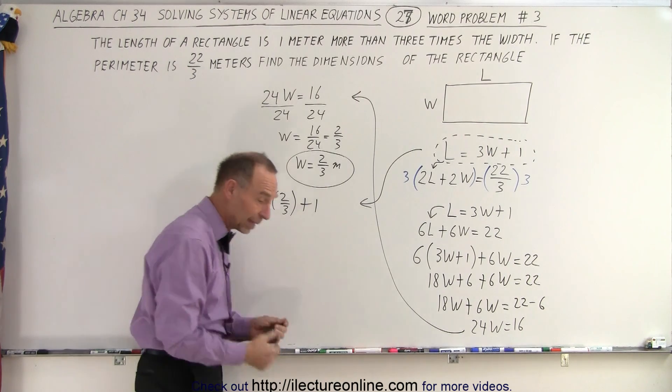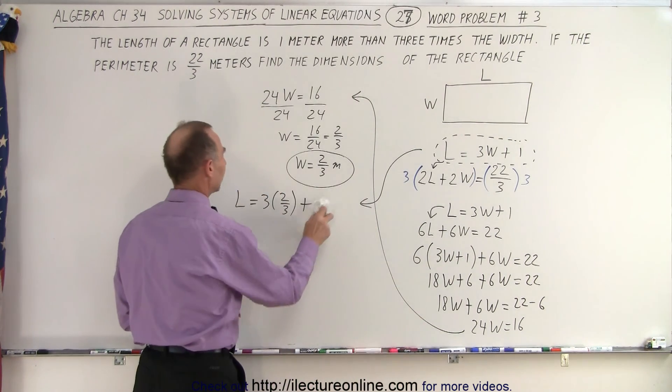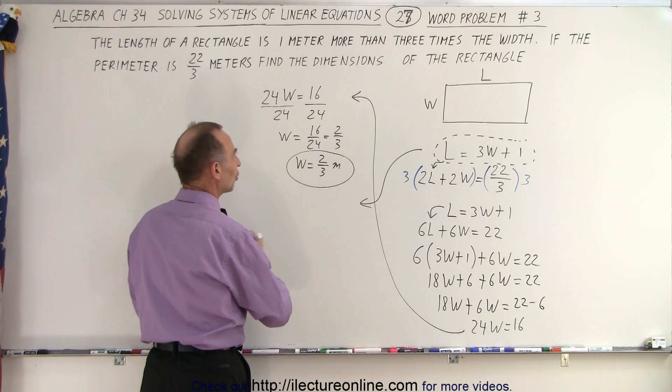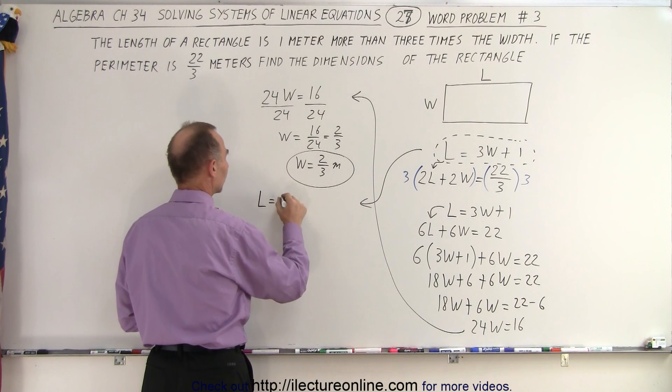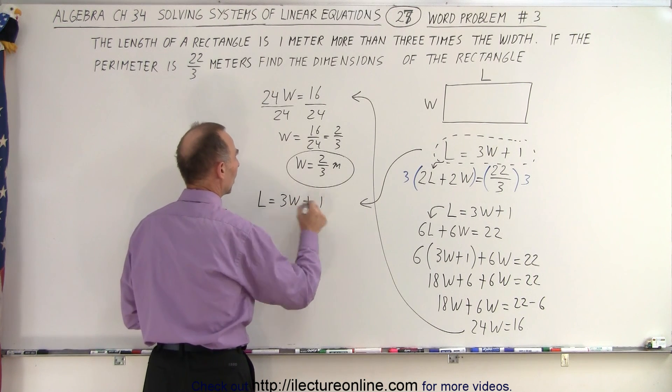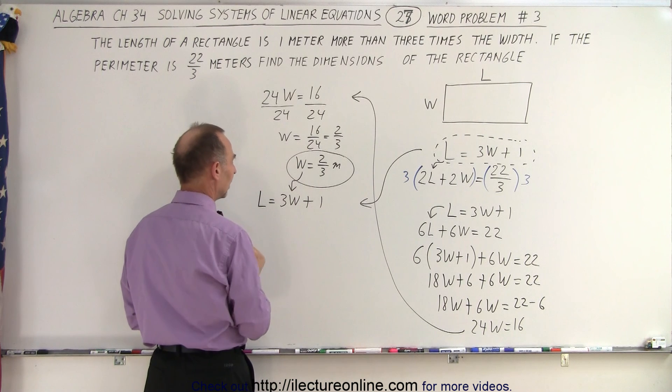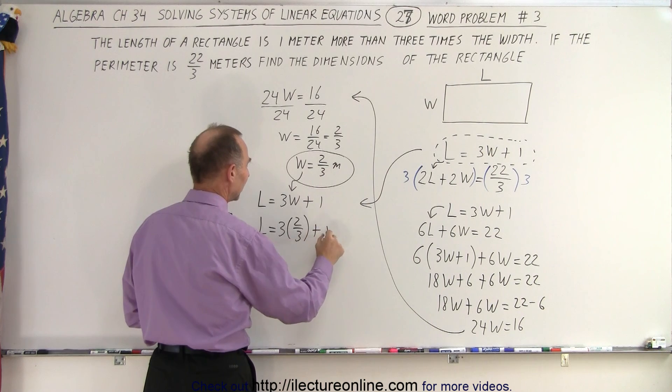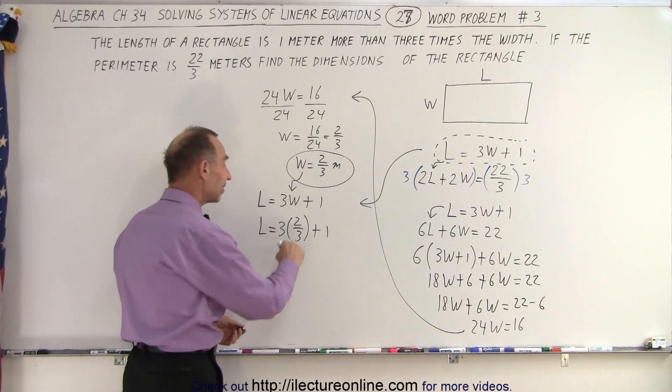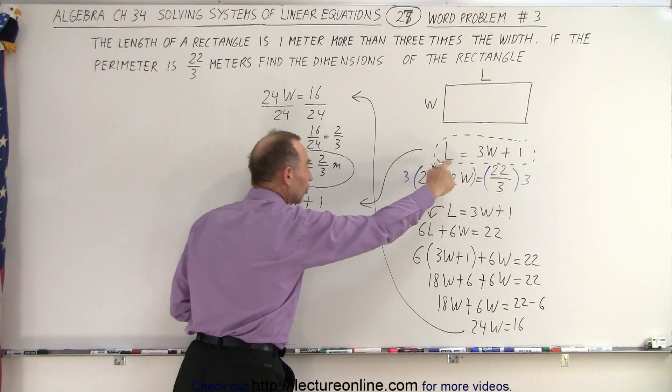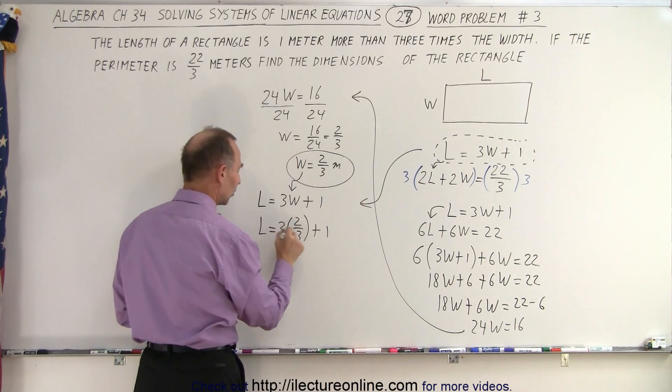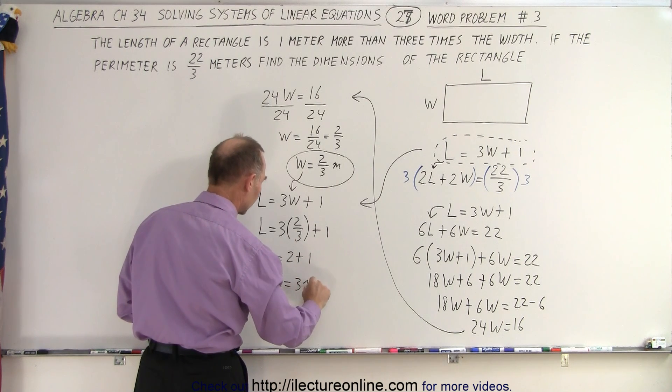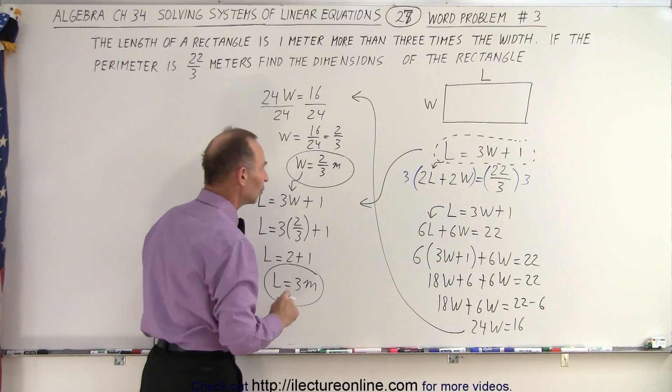Now, why did I make that mistake or come close to making a mistake? Well, let me show you where laziness doesn't pay off. What I should have done is I should have recopied the exact equation, L equals 3W plus 1, and then I substitute that in here. And notice L is equal to 3 times 2 thirds plus 1. And now I have that exact copy. I'm less likely to make that mistake than when I try to cross reference like this. So now that I have that, the 3 cancels out. L is equal to 2 plus 1, or L is equal to 3 meters. And the width is equal to 2 thirds meters.